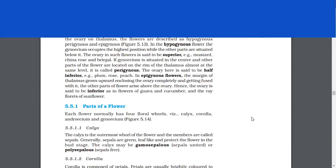If gynoecium is situated in the center and other parts of the flower are located on the rim of the thalamus, almost at the same level, it is called perigynous. The ovary here is said to be half inferior, for example, plum, rose, peach.